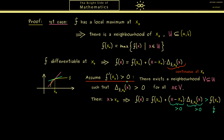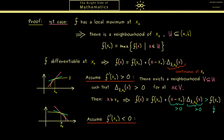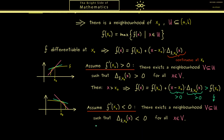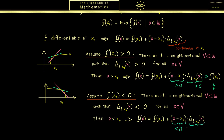Now let's look at the second possibility: f'(x0) is less than zero. We can just flip the picture from before and do the same argumentation. We take a neighbourhood V in U such that we have the negative slope in the whole neighbourhood. The only thing we change is that we now look at the left-hand side — both factors in the product are then less than zero, so the product itself is positive again, giving exactly the same contradiction. Therefore these two cases are not possible, so the only possibility that remains is that f' is exactly zero — which is exactly what we wanted to prove.